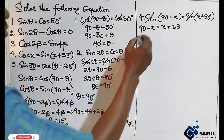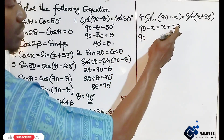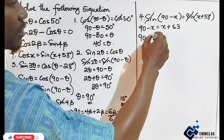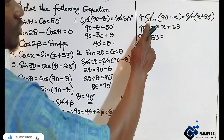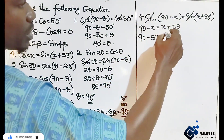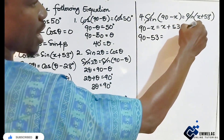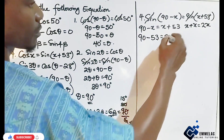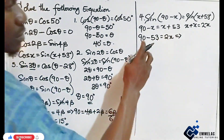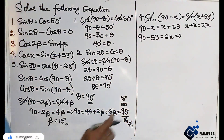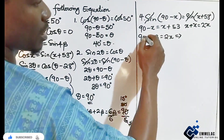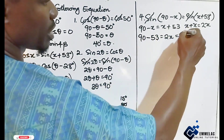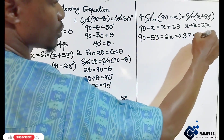Collecting like terms: 90 minus 53 equals x plus x, so 37 equals 2x.